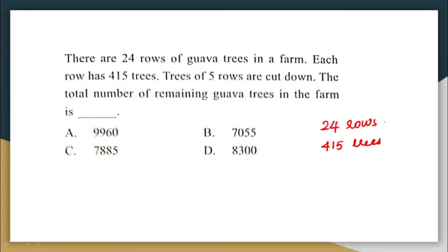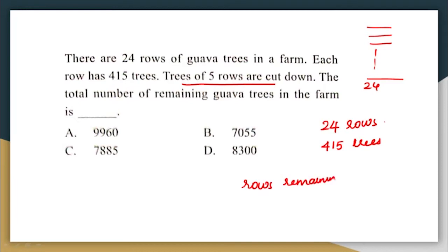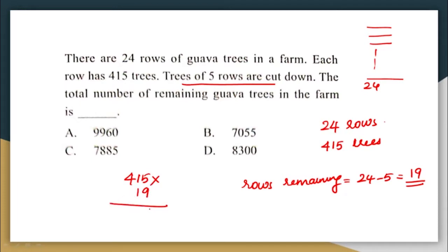Since 5 rows are cut down, the remaining rows are 24 minus 5, which equals 19 rows. Each of these 19 rows has 415 trees, so the total remaining trees is 415 multiplied by 19, which equals 7,885. The correct answer is option C.